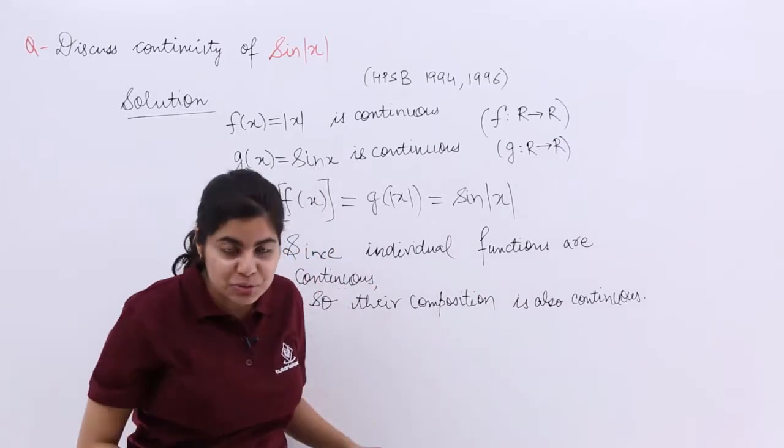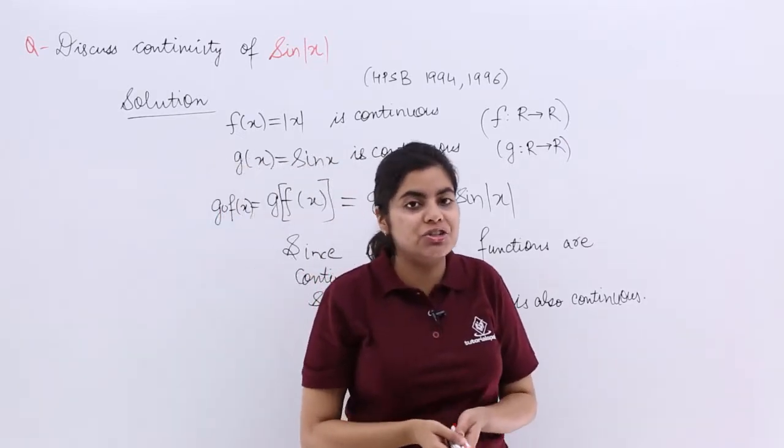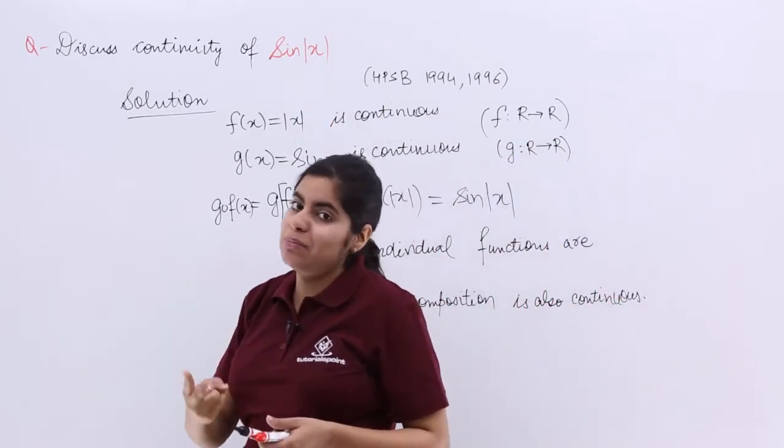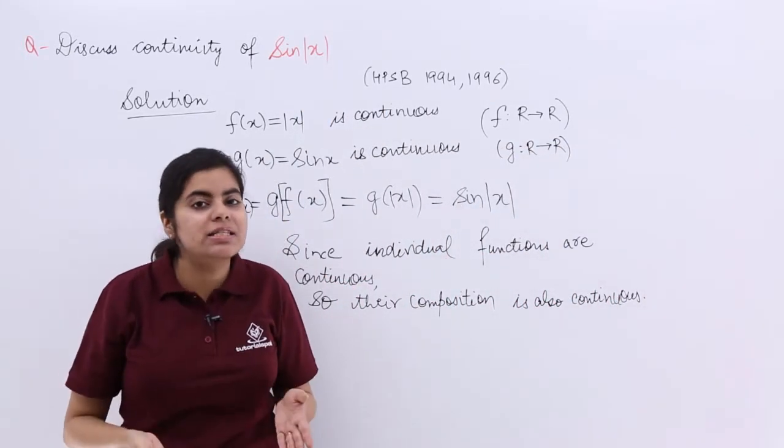So that is what we have to do in this question—discuss the continuity of sin |x|. sin |x| is a composition of two functions, sin x and |x|. We said that explicitly these functions are continuous, so their composition is also continuous.